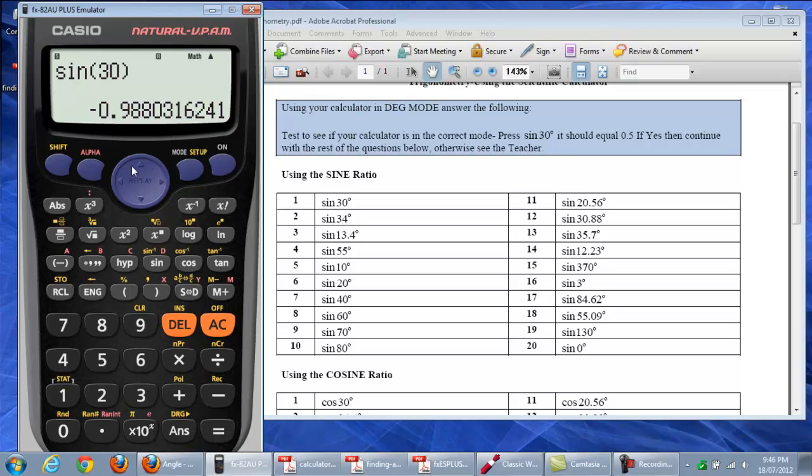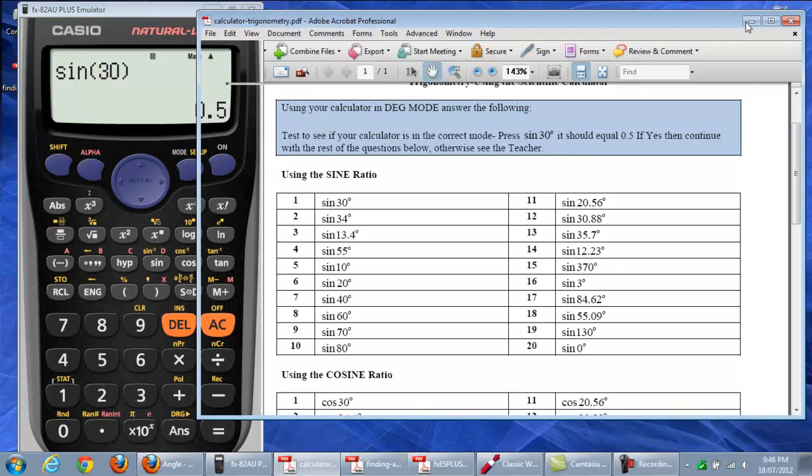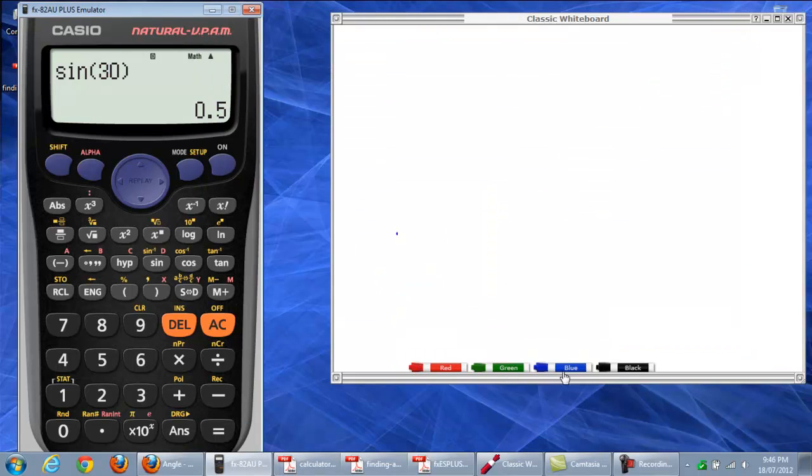Now, how do you set it back? Shift, set, select three, and now it's back in its correct mode, and you can see it there. So, that's how we can do those kind of questions. So, coming back, let's have a look at another question.